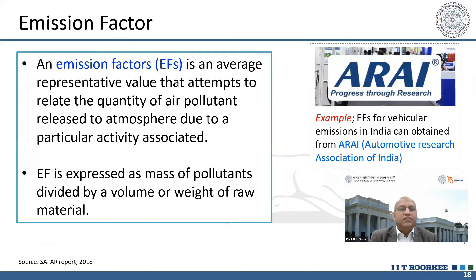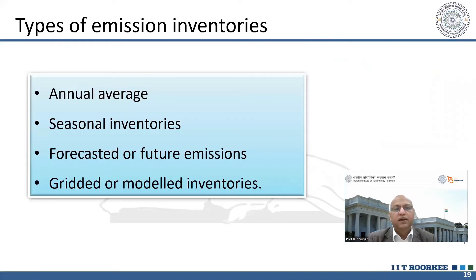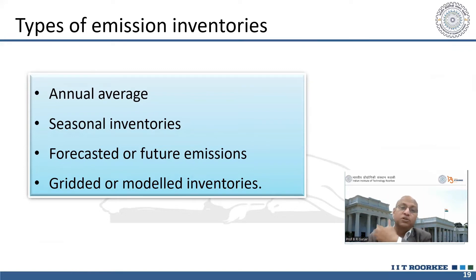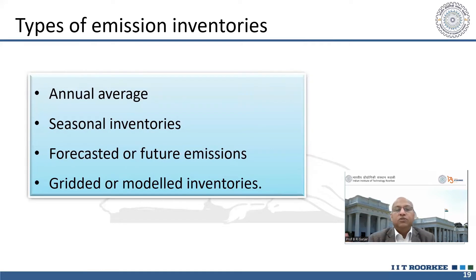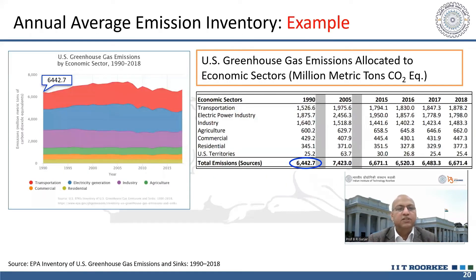Emission factors are average values that can be found through secondary literature sources, or you can develop your own emission factors depending upon available resources. Emission inventory can be developed on a daily basis, monthly basis, annual average basis, or as seasonal emission inventories or future emission forecasts. Depending on need, gridded or model-ready inventories can also be constructed.